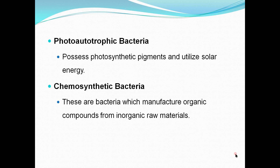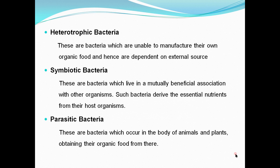Photoautotrophic bacteria possess photosynthetic pigments and utilize solar energy for the production of food. Chemosynthetic bacteria manufacture organic compounds from inorganic raw materials. On the other hand, heterotrophic bacteria are not able to manufacture their own food and are dependent on external sources to obtain nutrients and survive in the environment.